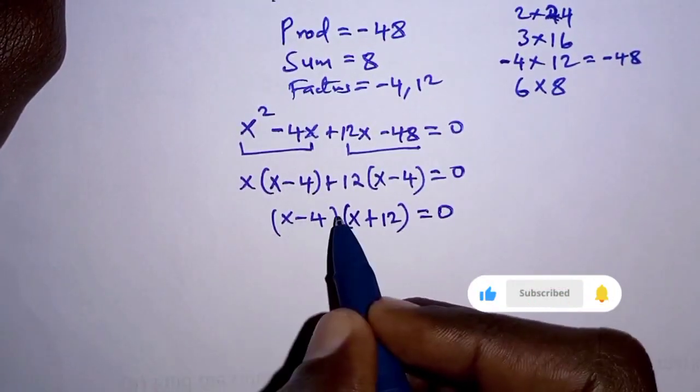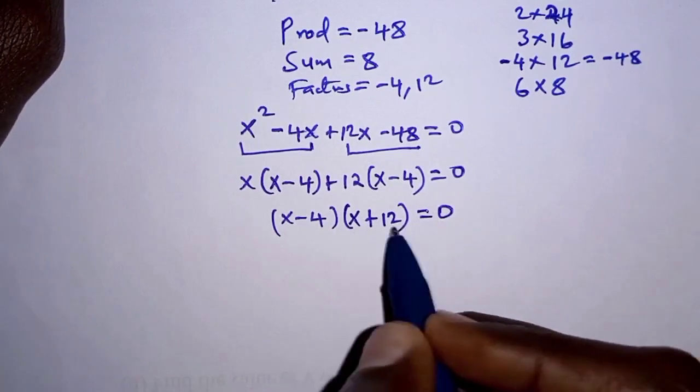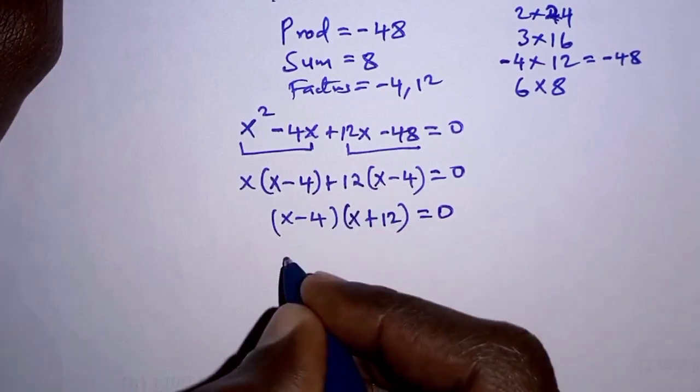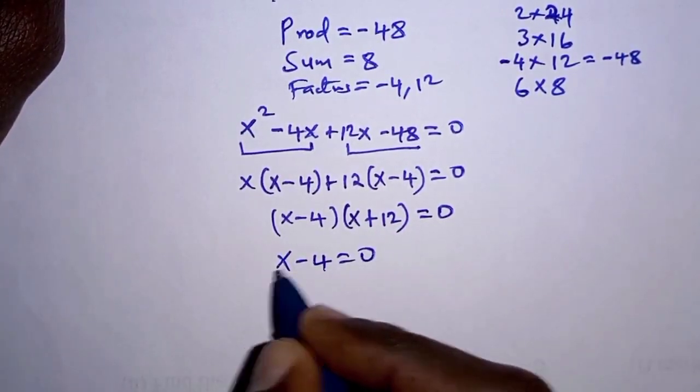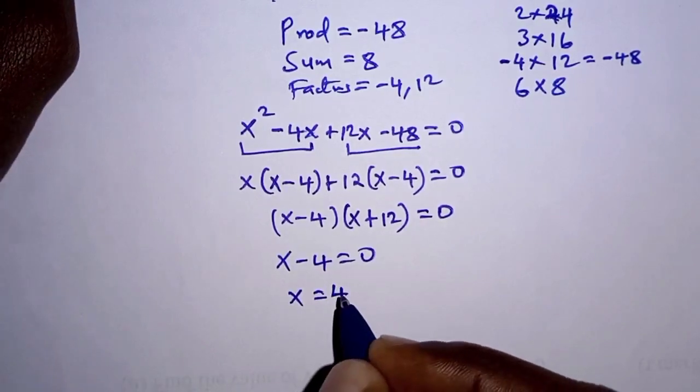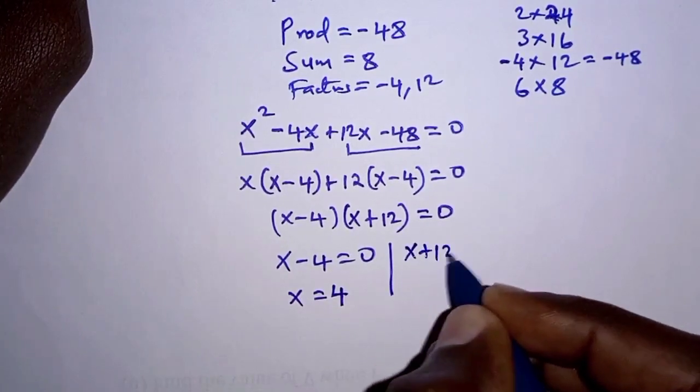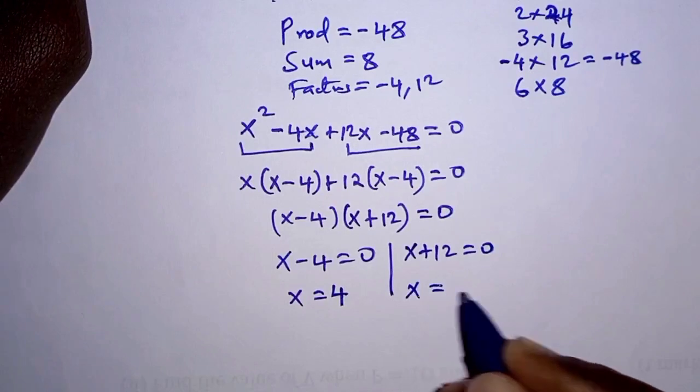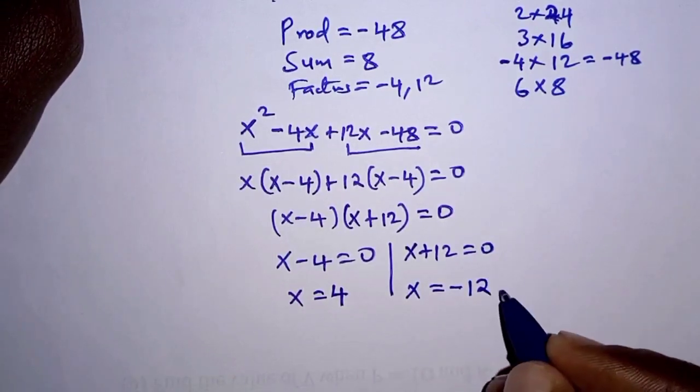If we equate the first bracket, X-4 = 0, we get X = 4. If we equate X+12 = 0, we get X = -12. Thus we have determined the possible values of X as desired.